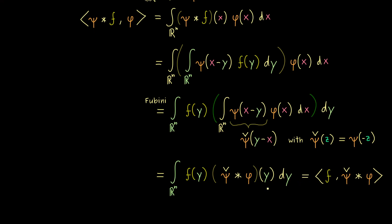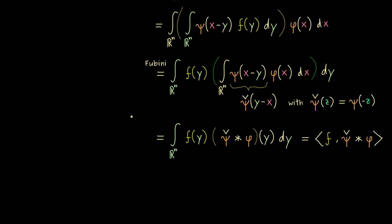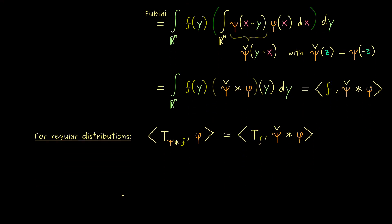And now this implies that we have a result for regular distributions. So we just take the regular distribution associated to the function f. And as always, instead of the inner product, we just take the dual pairing. So this means we put in a distribution here on the left-hand side and a test function on the right-hand side. And now the formula from above tells us that this is the same as T_f applied to ψ check star φ. And since we have this for regular distributions, we can also write it down for all distributions. But at this point, as always, it becomes a definition.